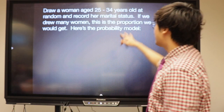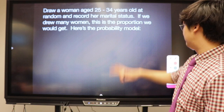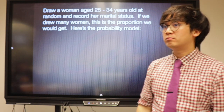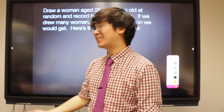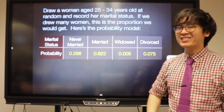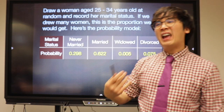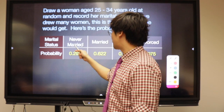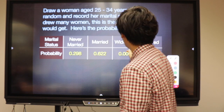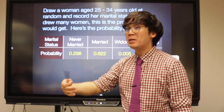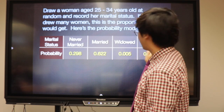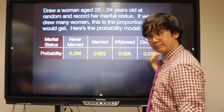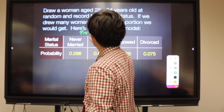Here is an example of a survey. They asked 250 women about their marital status: never married, married, widowed, and divorced. They counted the number of women who answered each and divided by the total to get a probability model.